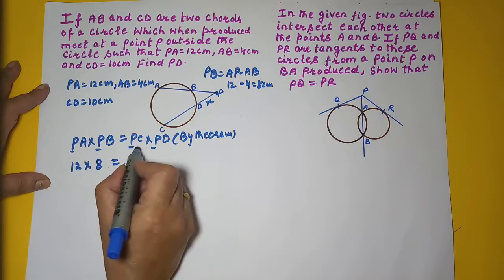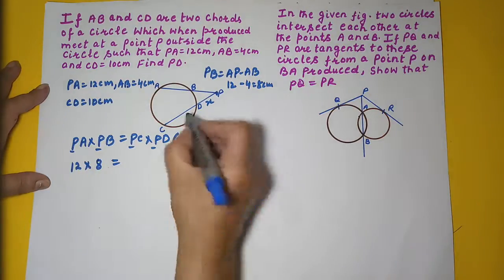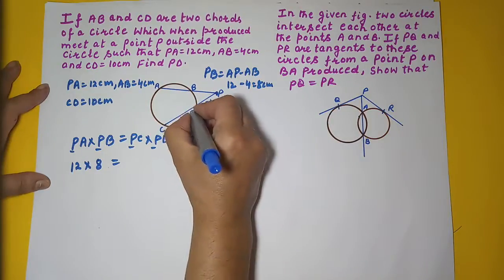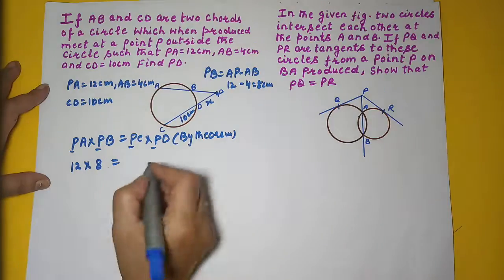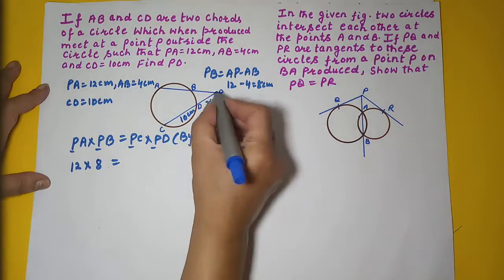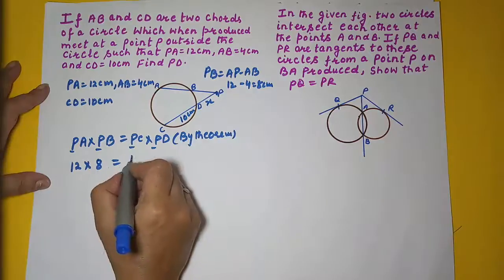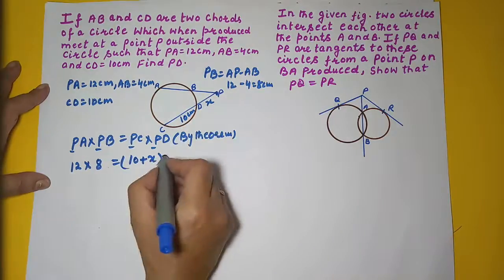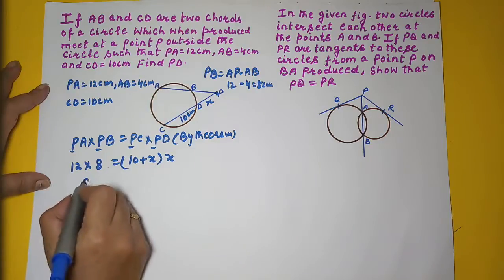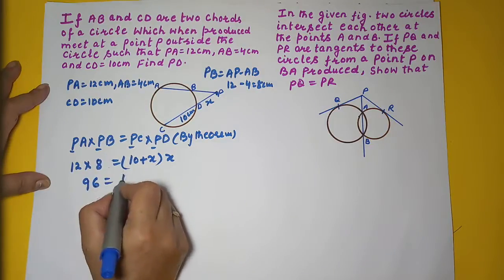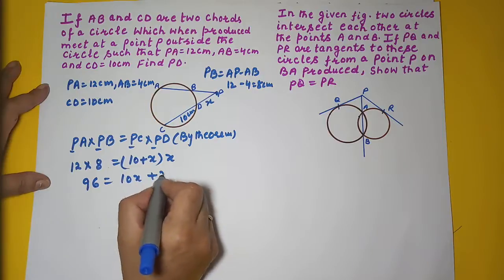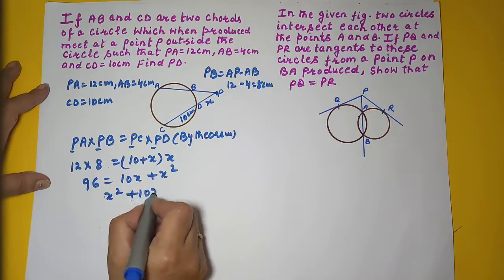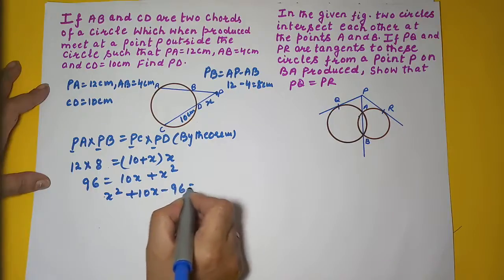We don't have PC directly, but CD is 10 cm. So we can write PC as 10 + X and PD as X. Substituting into PA × PB = PC × PD gives 12 × 8 = (10 + X) × X, which becomes a quadratic equation in X.